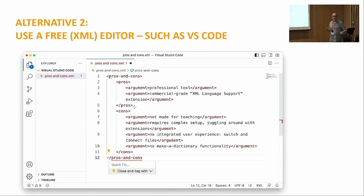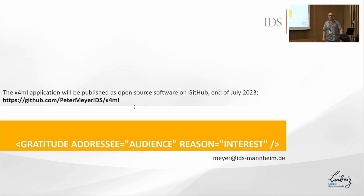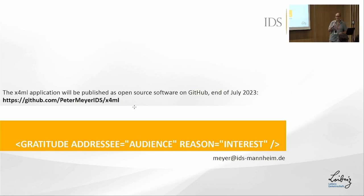What fared far worse was using a freely available editor like Visual Studio Code, which you can extend with many extensions. But you have a complex setup, you must juggle between different views and invoking different extensions, it's not made for lexicographers, it has no integrated user experience, and it doesn't offer a dictionary view or anything like that. This concludes my brief tour. X4ML will be published roughly at the end of the month, and there is also a publication — ask me for details. Thanks for your attention.